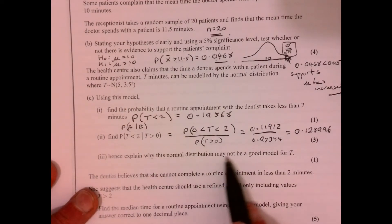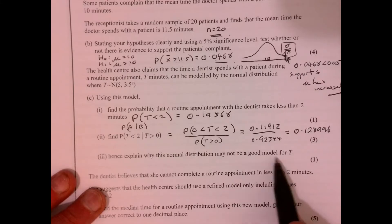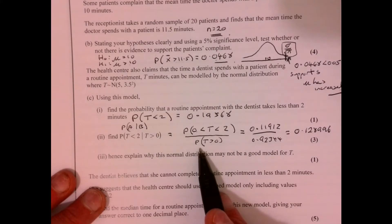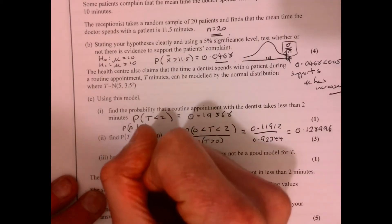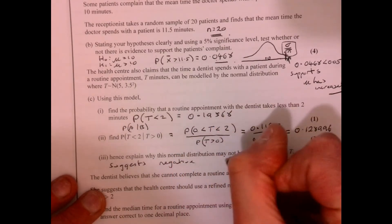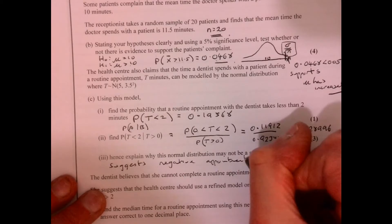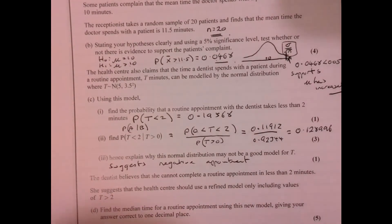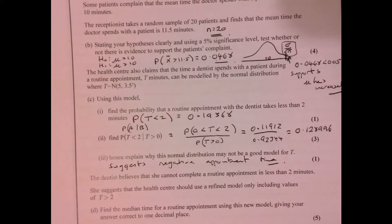Part three. Hence explain why this normal distribution may not be a good model. Well, it suggests that we're going to get a negative appointment time. Well, that can't be right, can it? So it suggests we get a negative appointment time. It would be quite handy if we could get negative appointment times, but we can't.